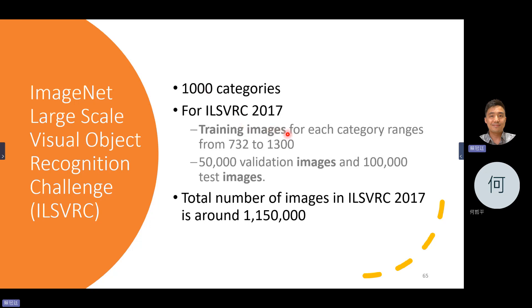Her students and data labelers prepared around 1,000 images for each class, plus an additional 50,000 validation images and 10,000 test images. So the total number of training images is around 1 million — a very large dataset at that time.